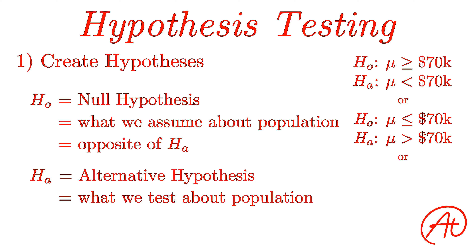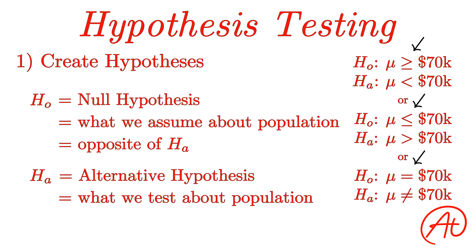The other scenario is if you think the true mean is just something different than $70,000 — it could be higher or lower, but you just don't think it's equal to $70,000. In that case, your alternative hypothesis would be mu is not equal to $70,000, and your null hypothesis would be mu is equal to $70,000. These are the three main scenarios you'll come across. One key thing to notice is that no matter the example, the null hypothesis always has some form of an equal sign in it. Also, while these examples used means, you can also see these types of problems for proportions and other measures.